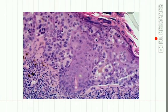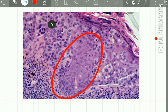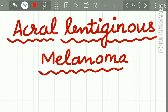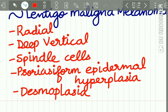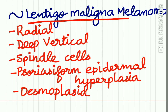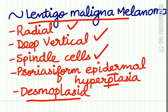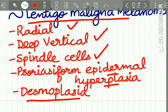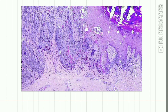Here you can see cords of atypical melanocytes in lentigo malignant melanoma. Acral lentiginous melanoma shows histologic features similar to lentigo malignant melanoma. It has both radial and deep vertical growth phases. Spindle cells are present, psoriasiform epidermal hyperplasia is present, desmoplasia is present, and an intense host cell response is reported.